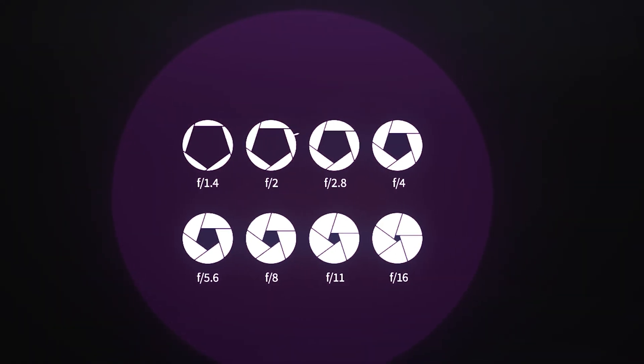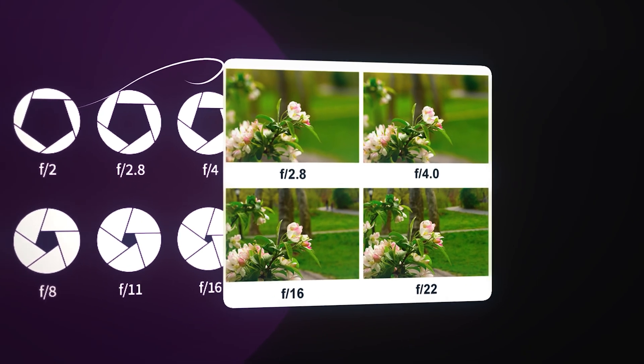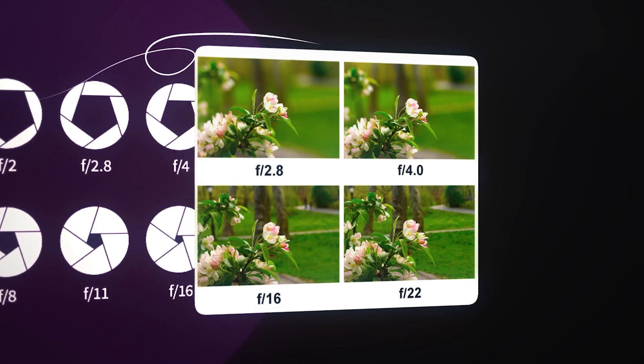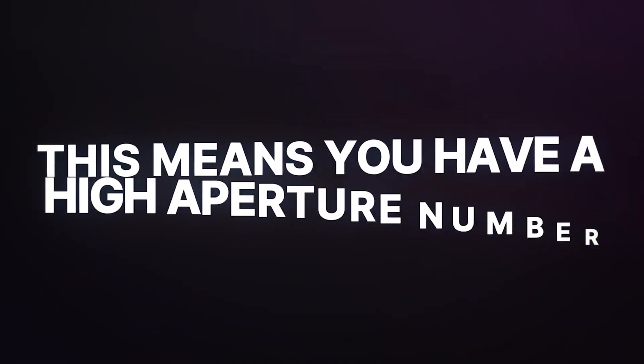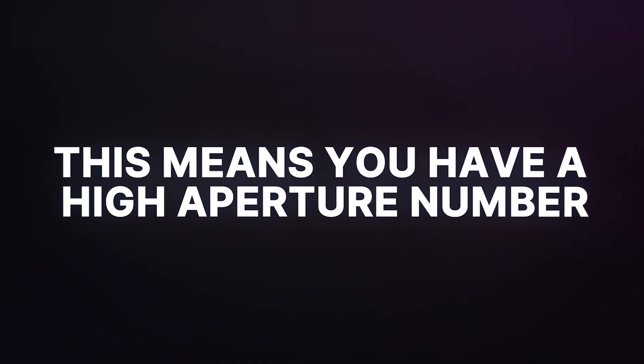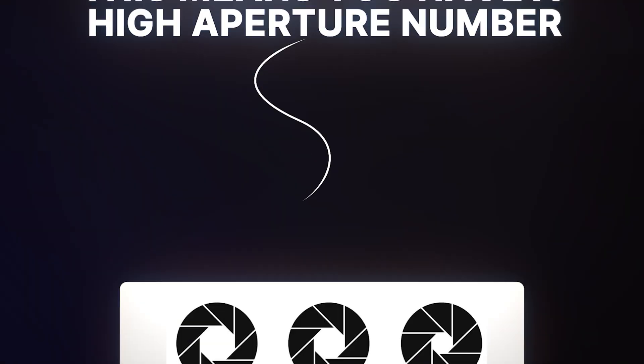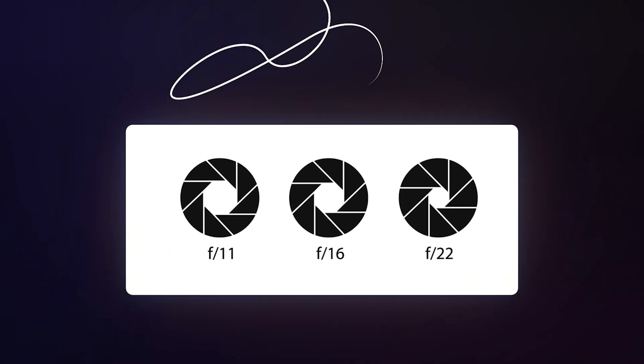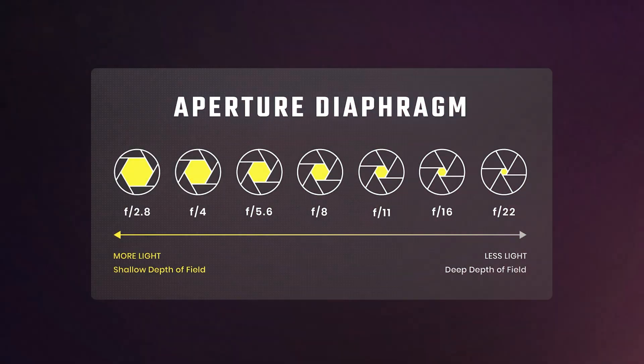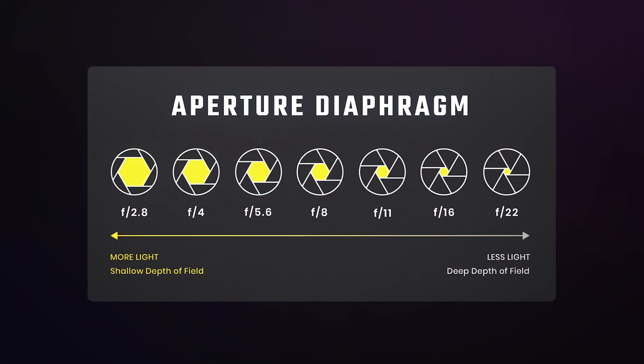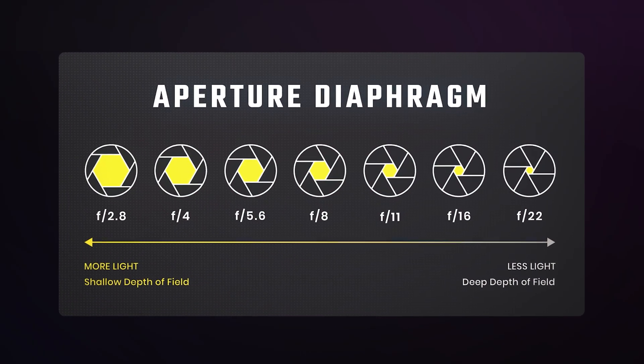This actually has an effect on the way your footage looks — and this is true of both photo and video. When you have that aperture closed down nice and small, this means you have a high aperture number. Something like F10 or F22. These are big numbers — the numbers go up as your aperture gets smaller and smaller.